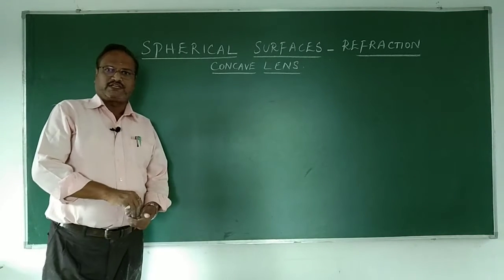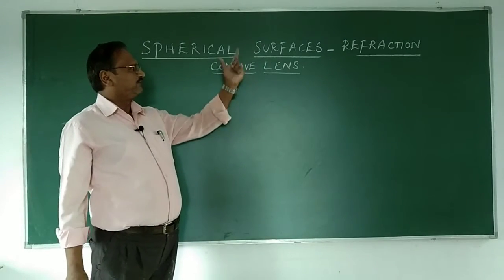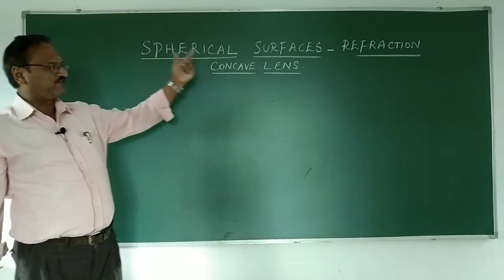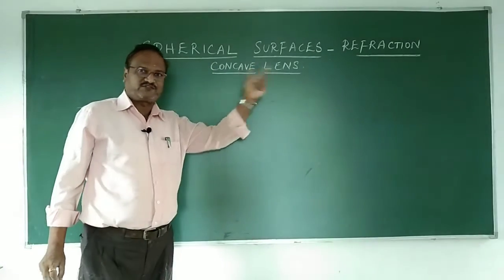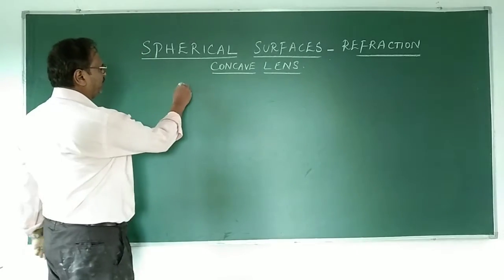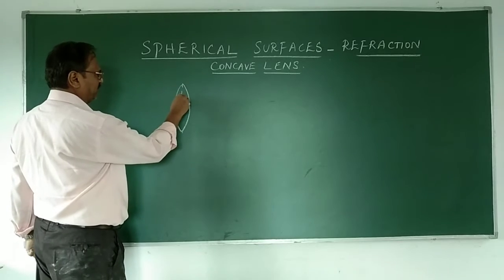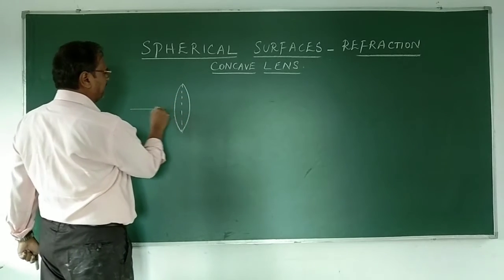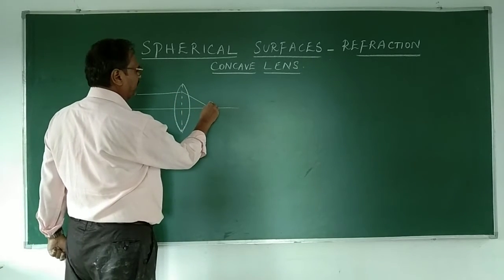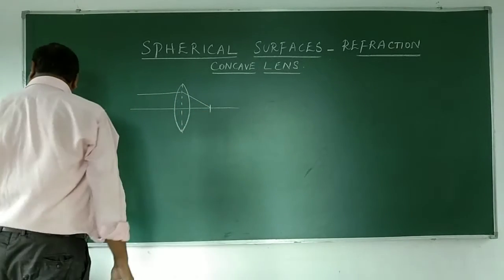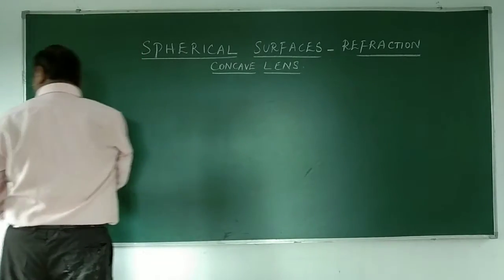Hello students. In this video we are going to study about refraction through spherical surfaces, but this time it is going to be a concave lens. The previous video was about convex lens, which is a converging lens, and when a ray is passing parallel to the principal axis it was converging at a point. Now in this video we are going to study about a concave lens.